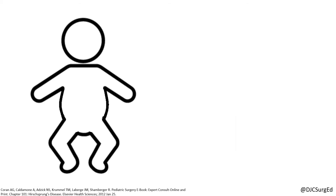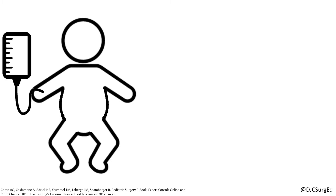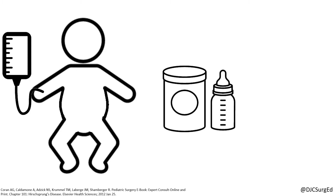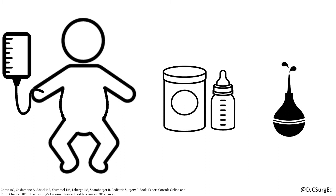Initial resuscitation is critical in neonates with an intestinal obstruction or enterocolitis. Once stabilized, definitive operation can be done on a semielective basis. Neonates are usually maintained on breast milk or elemental formula with rectal stimulation or irrigation. Occasionally, a colostomy is needed for decompression.